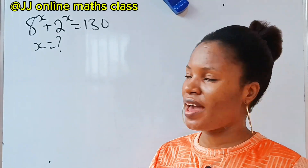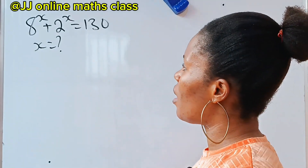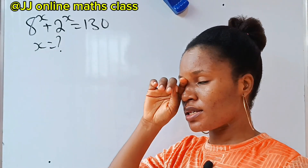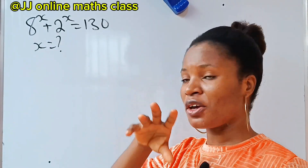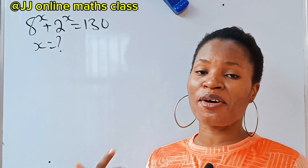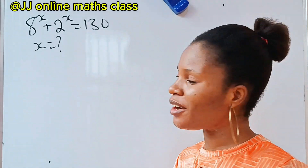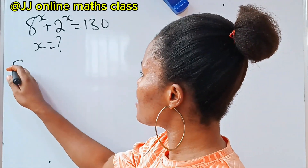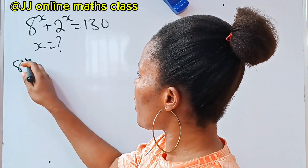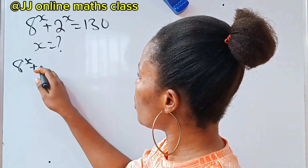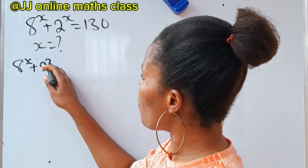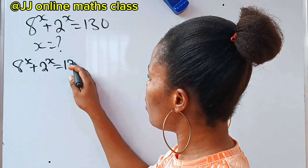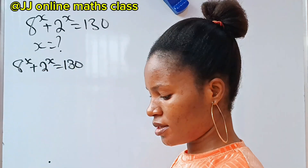Let's solve for the value of x, where x is real. Welcome to my channel today. We have that 8 to the power of x plus 2 to the power of x is equal to 130.